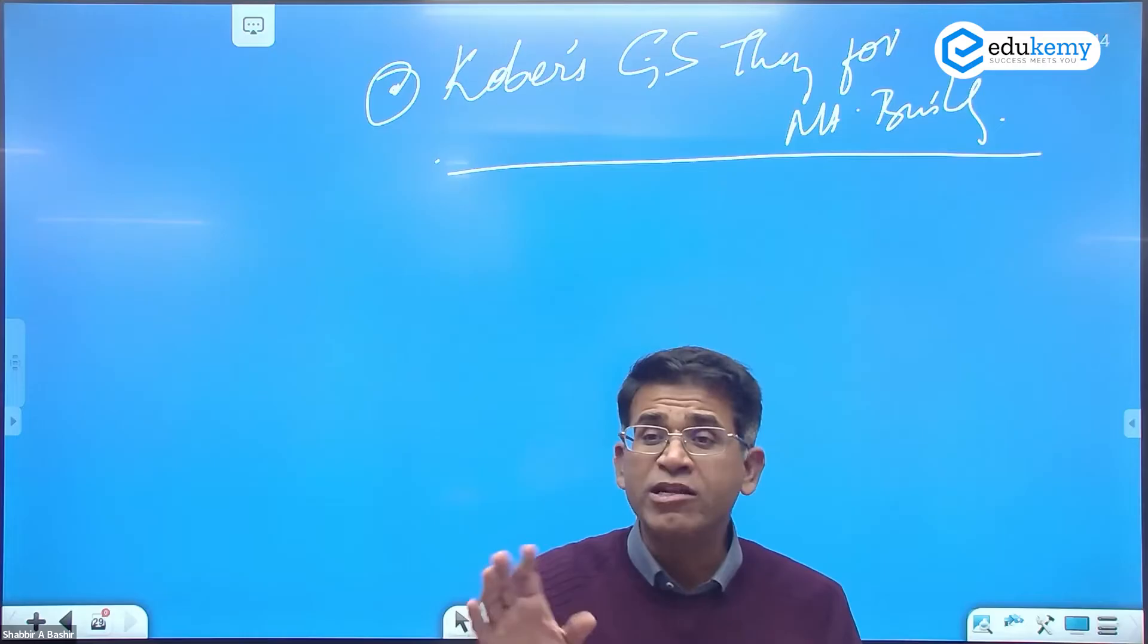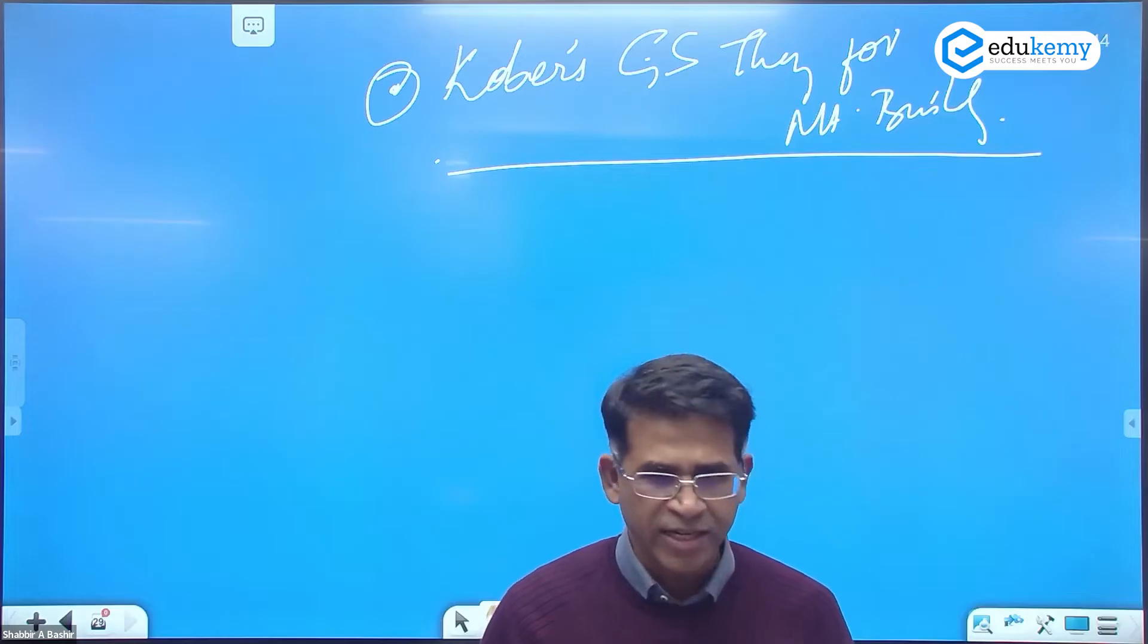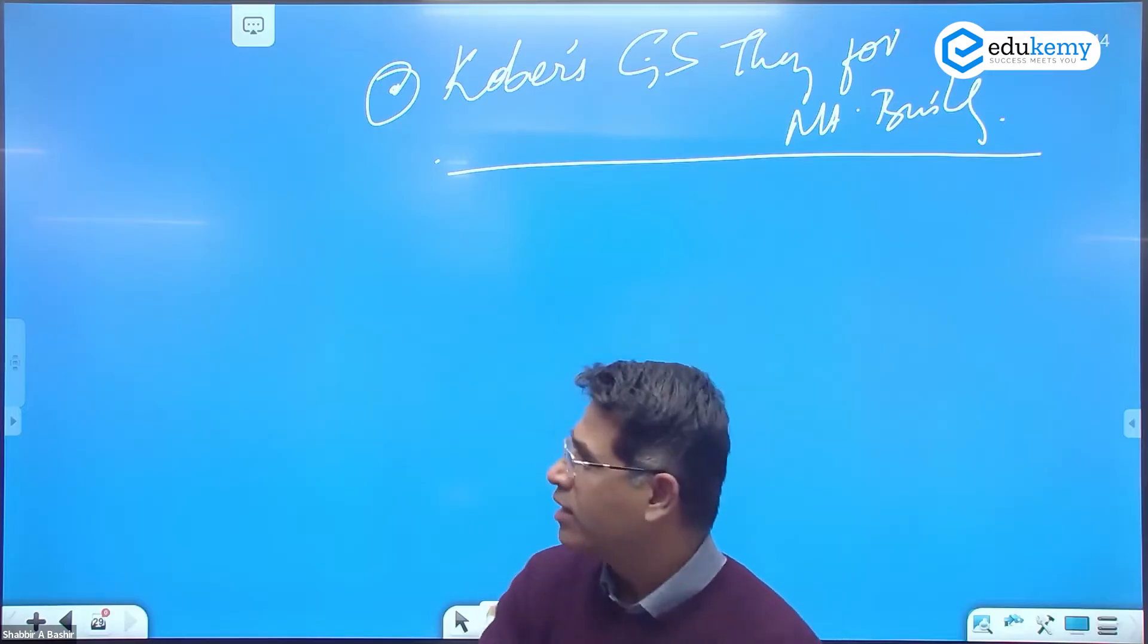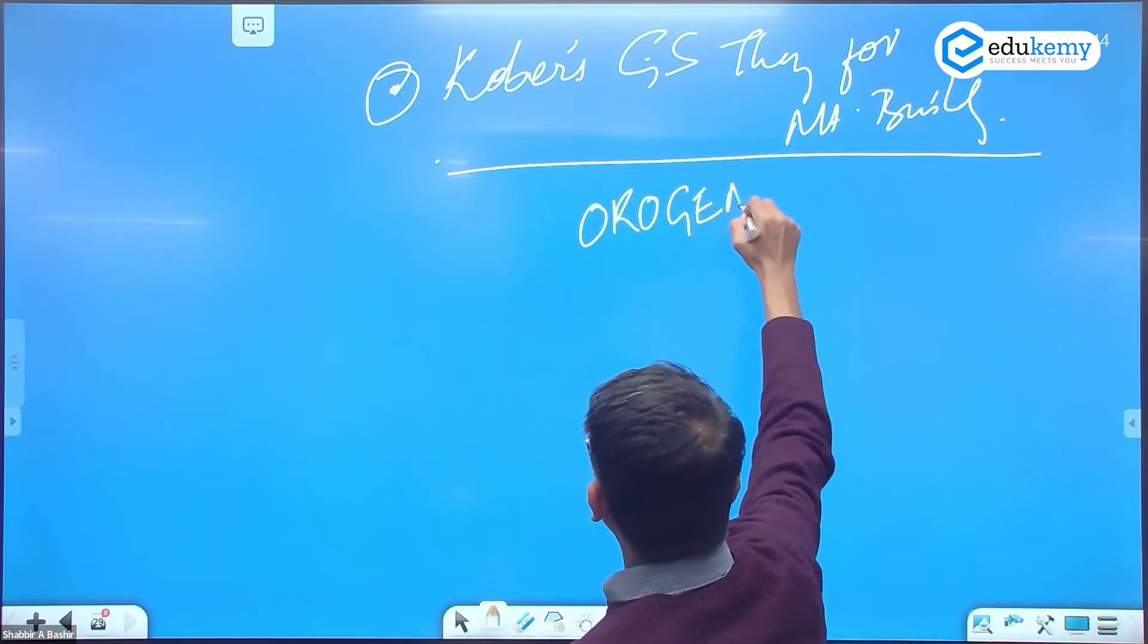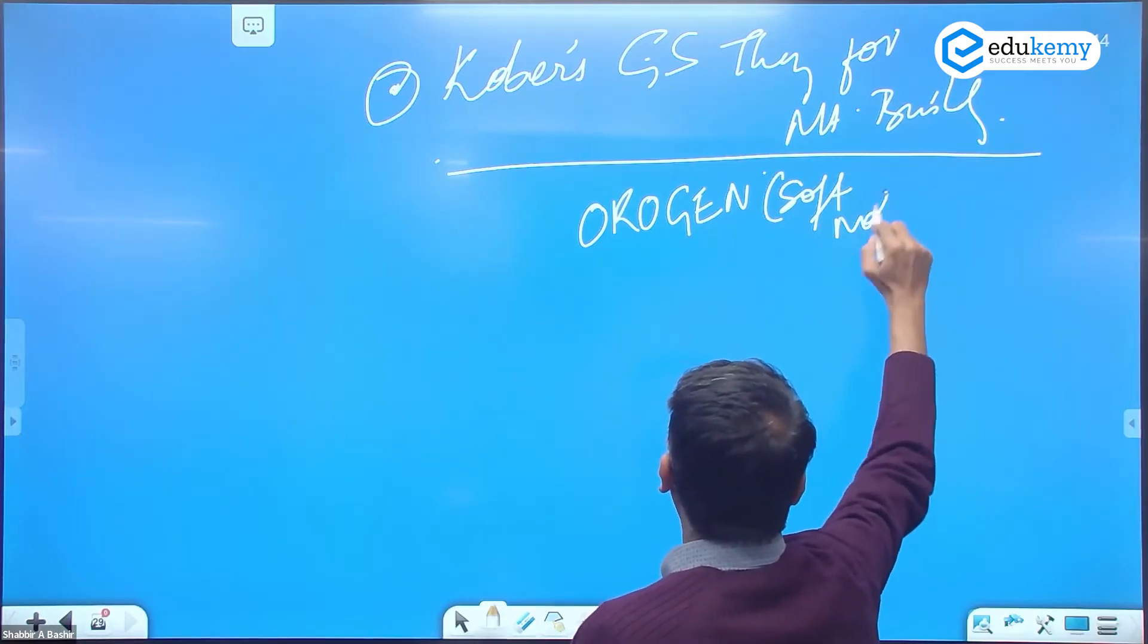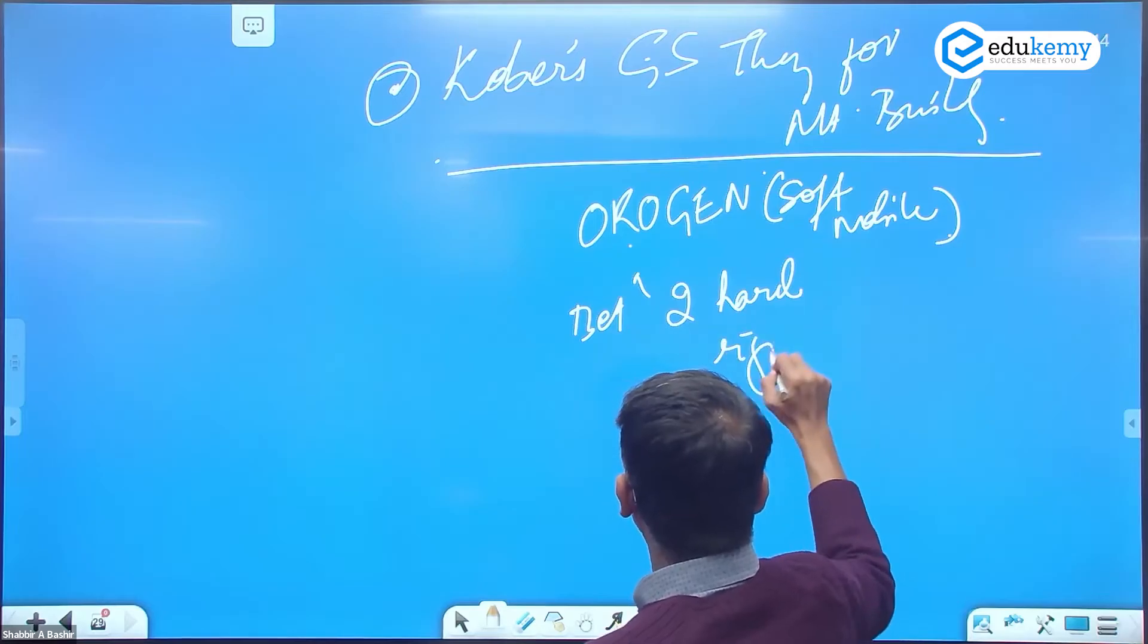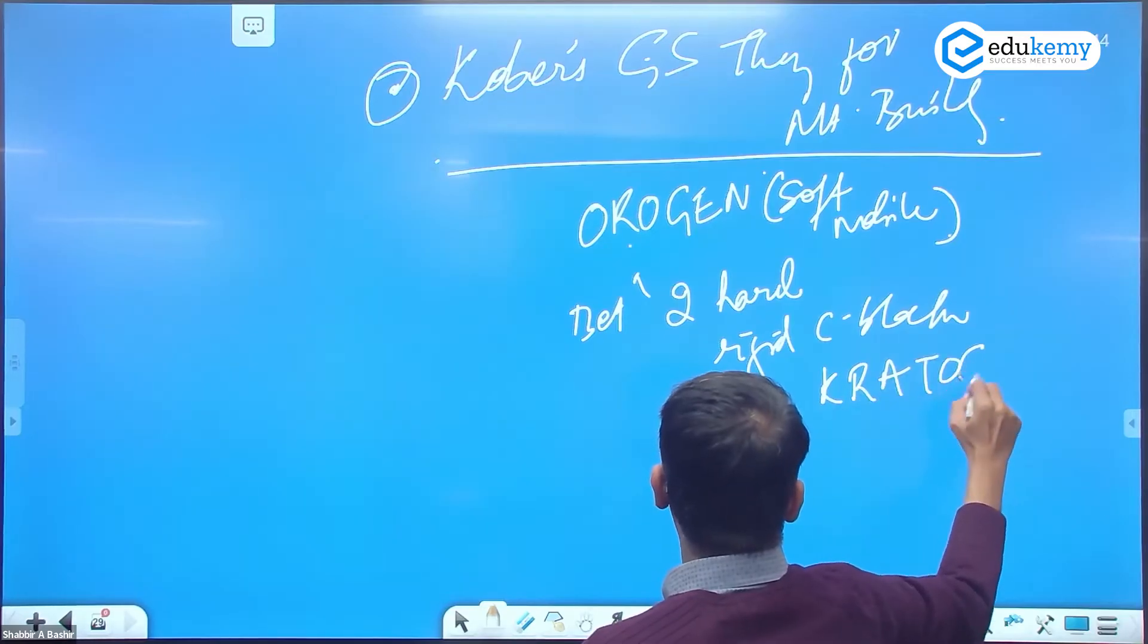Are soft mobile zones. They are soft mobile zones between two rigid hard continents that he called as Kratogen's. So Orogen, a German word for mountains, these are mobile zones. They are formed between two hard and rigid continental blocks that he called as Kratogen's.